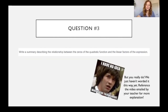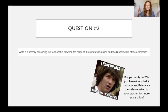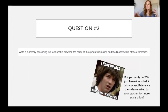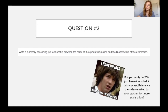Question number three: write a summary describing the relationship between the zeros of the quadratic function and linear factors of this expression. That's okay if you're unsure — we're going to make a secondary video and break down exactly what each question is expecting of you and ways that you can submit it. So if you can't quite figure out what this is asking, we've taught it to you, but we might not have worded it this way. So check out the video to come from your teacher.